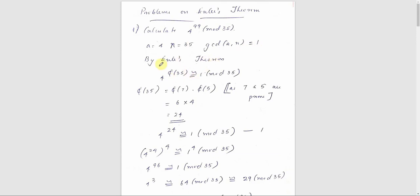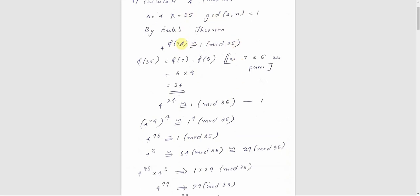By Euler's theorem, 4 raised to φ(35) is congruent to 1 mod 35. Now we evaluate φ(35). φ(35) can be written as φ(7) times φ(5). φ(7) is 6 and φ(5) is 4, so 6 times 4 equals 24.